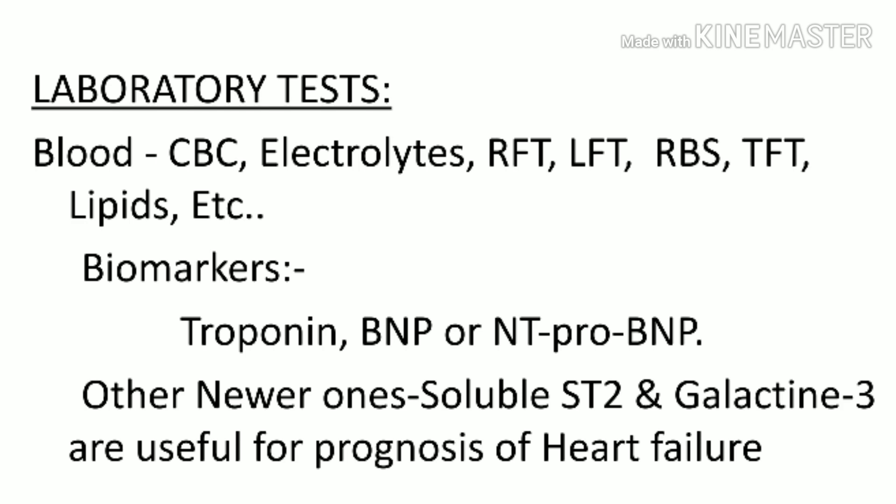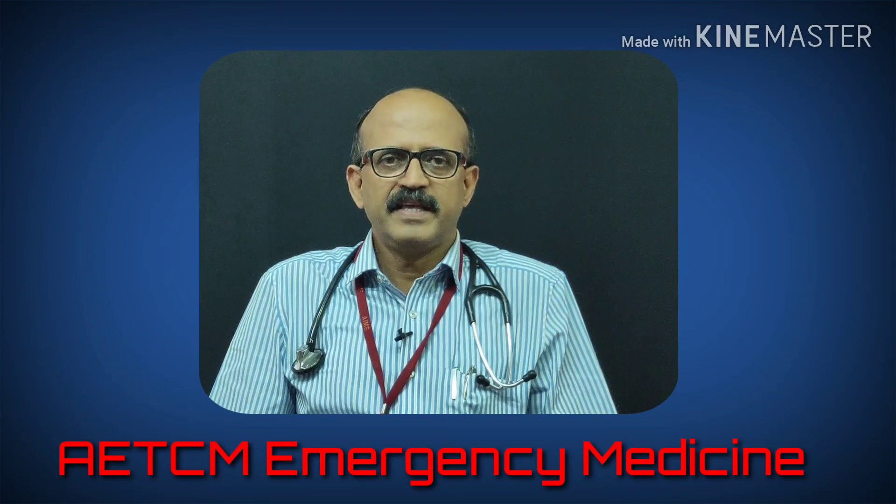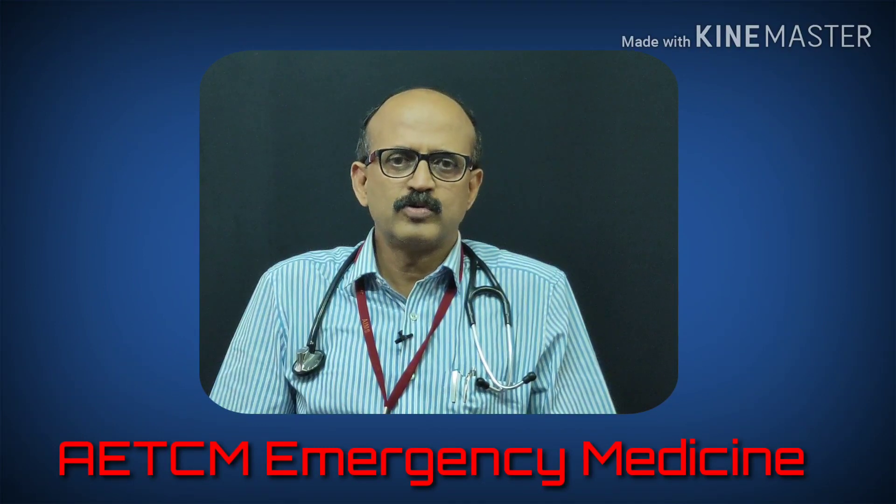Liver function tests are altered in cardiac failure. Random blood sugar is very important as it can damage multiple systems. Thyroid function tests are important because hyperthyroidism is a well-known cause of heart failure. Lipids may act as a risk factor for ischemic cardiomyopathy. Key biomarkers in acute settings include troponin, BNP, and NT-proBNP. Newer markers — soluble ST2 and galectin-3 — are also useful for prognosis.